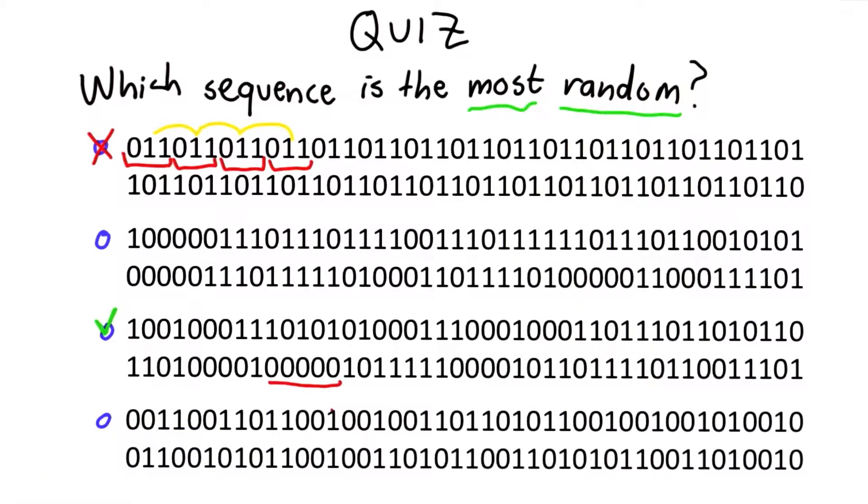You can see there's a sequence of five zeros here. There's a sequence of four ones. There's lots of repetition. In this, there's never more than two in a row. So, this is not random.